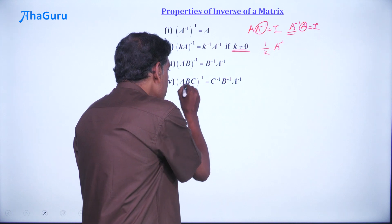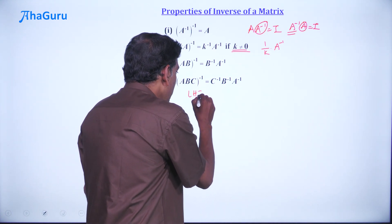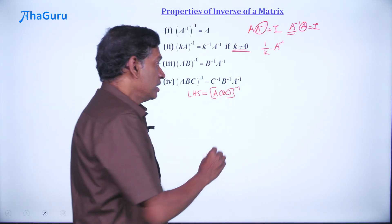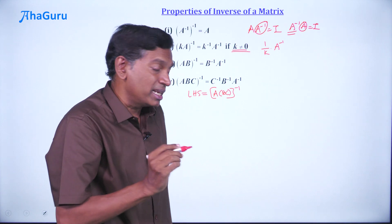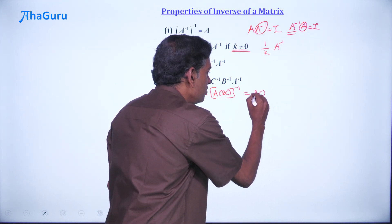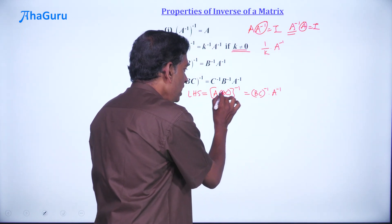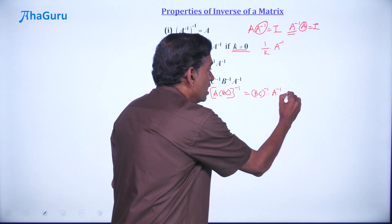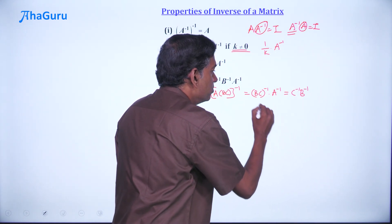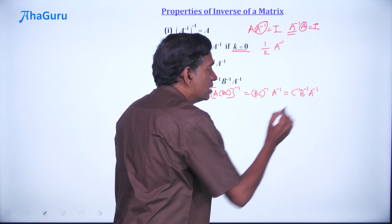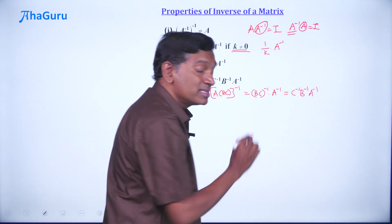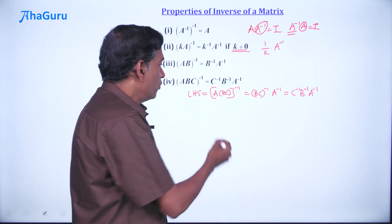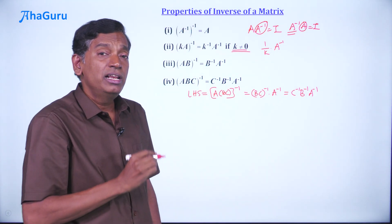This product rule extends further. If you have three matrices ABC, their inverse is C inverse B inverse A inverse. To prove this, write ABC inverse as the inverse of A times BC. Think of BC as one matrix, so this becomes BC inverse times A inverse. Then apply the product rule again: BC inverse is C inverse B inverse. So even for three matrices — and by extension four or five — the rule applies: write the inverses in reverse order.